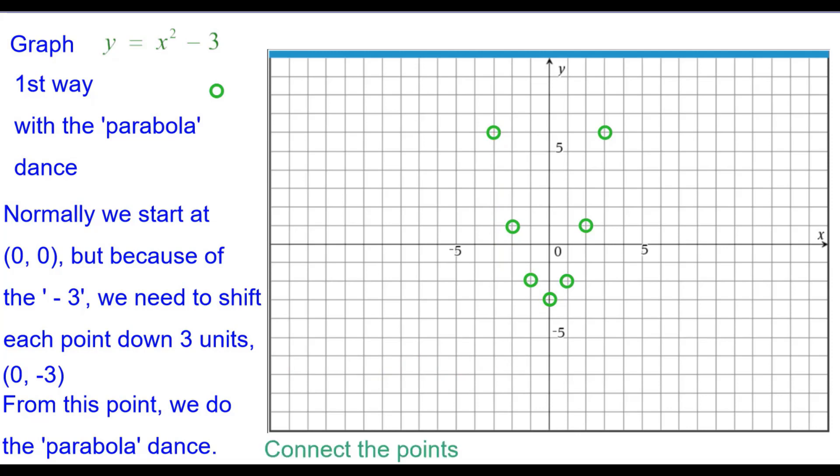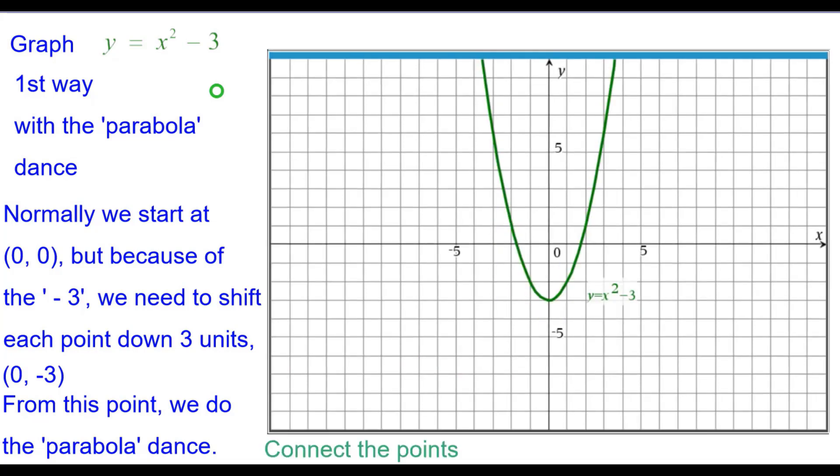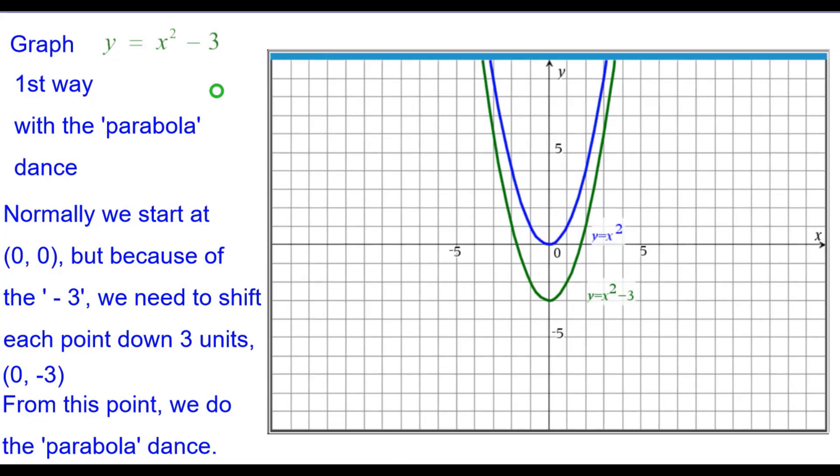We can go ahead and connect the points and make a beautiful parabola. And I'd like to compare that to the parent function y equals x squared. And you'll notice that from the blue to the green it's down 3 from that point, down 3 from that point, and actually down 3 from every single point.